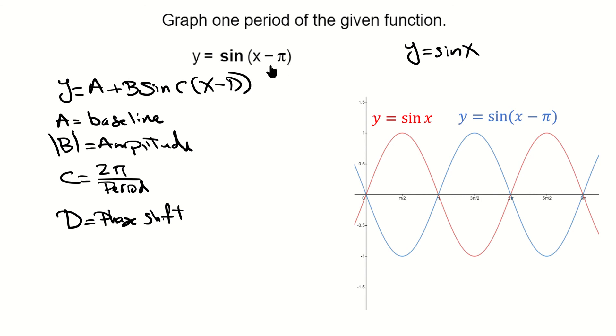So if we simply take the red graph, which is the graph of sine, and shift it pi units to the right, we're going to end up with the graph of y equals sine of X minus pi, the blue curve. Notice that instead of beginning at zero, this one starts its cycle at pi because it's exactly shifted pi units to the right.